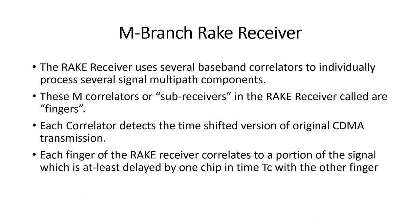Each correlator is tuned to a specific time-shifted version of the original CDMA transmission. Correlator 1 is tuned to delay tau 1, receiving the first multipath component; correlator 2 to tau 2 for the second component; and so on up to tau M for the M-th multipath component. Each finger of the rake receiver correlates to a portion of the signal delayed by at least one chipping time TC from the other fingers.